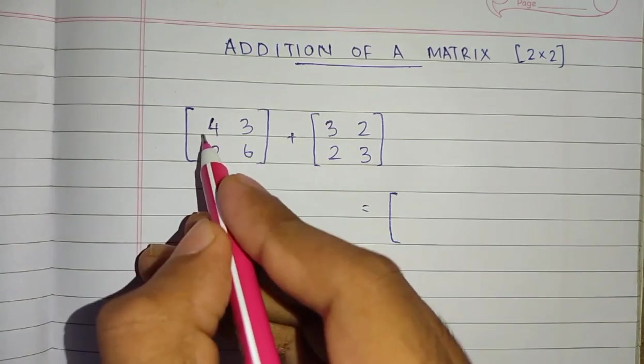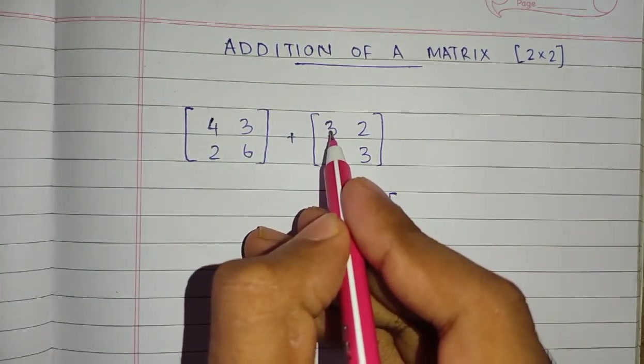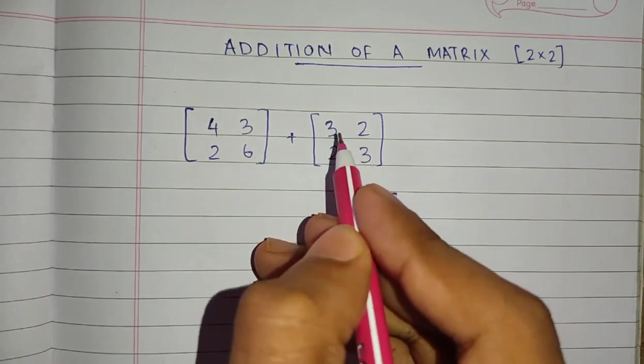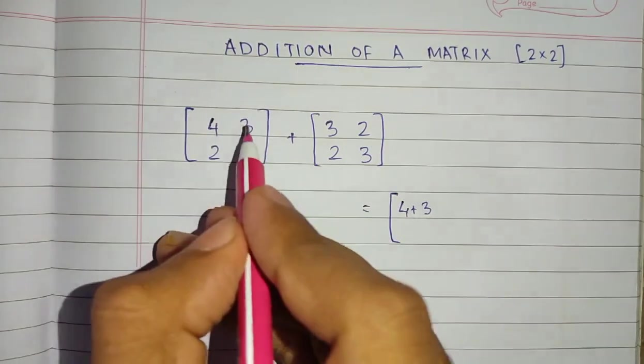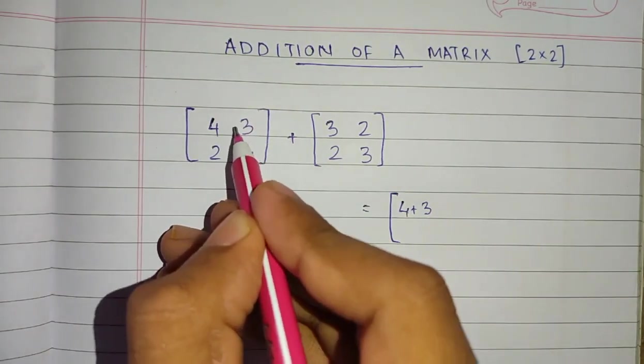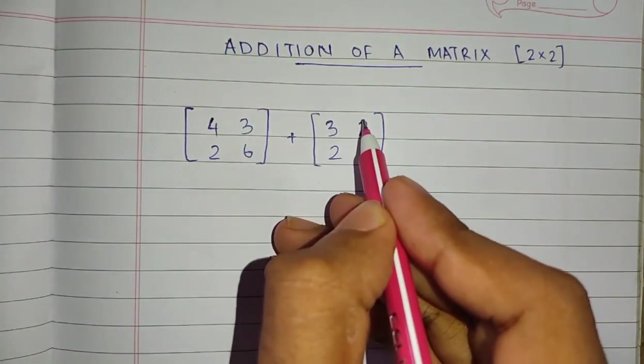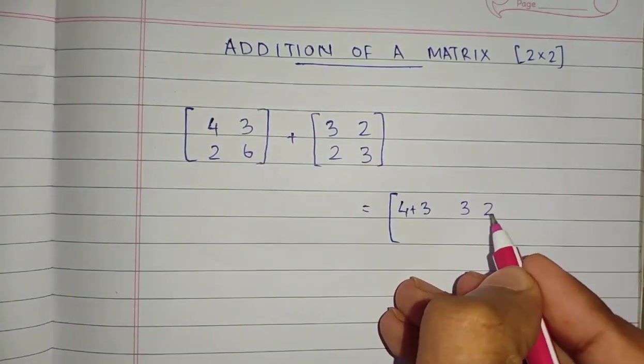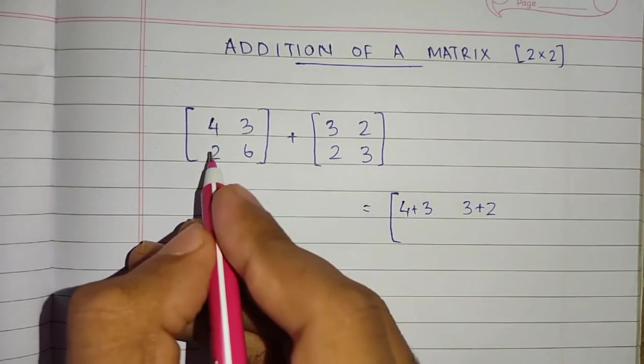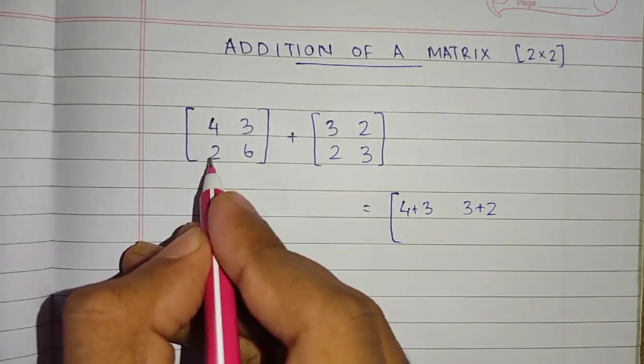4 and the first element in the second matrix, that's 3, and add it: 4 plus 3. The second element here, we will take this 3 and the second element of the second matrix, 2, and put a plus sign in between: 3 plus 2. Similarly, we take 2 here.